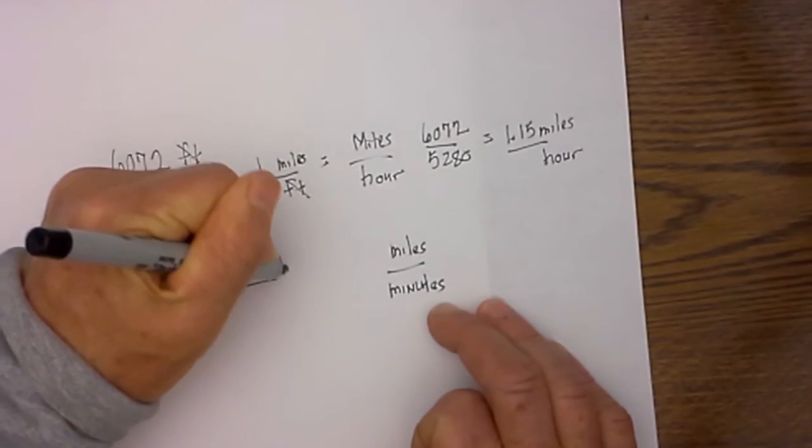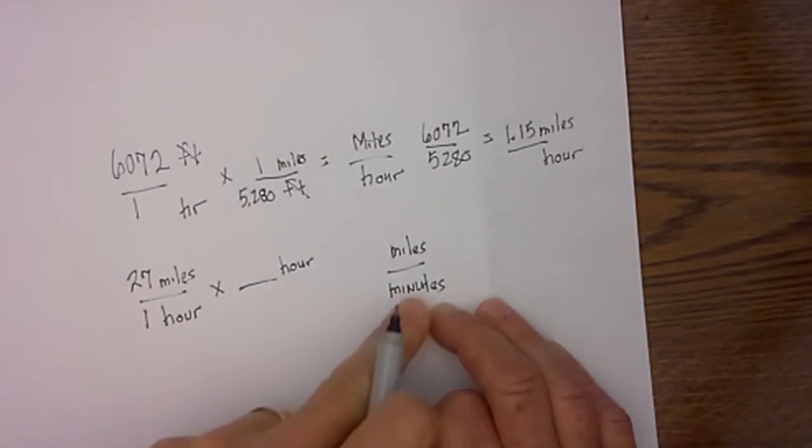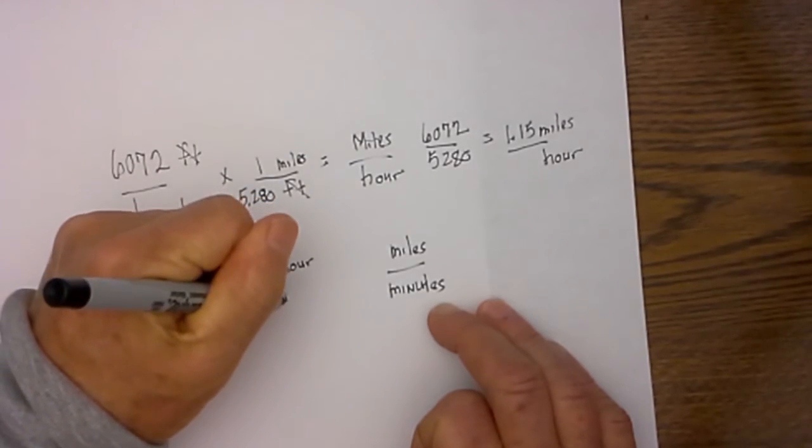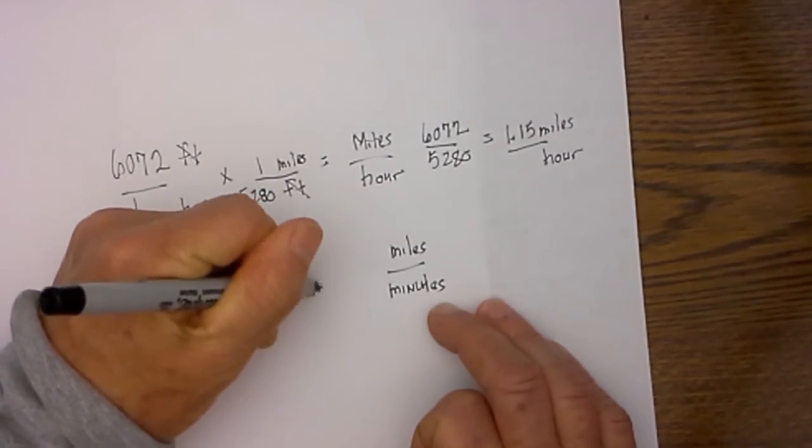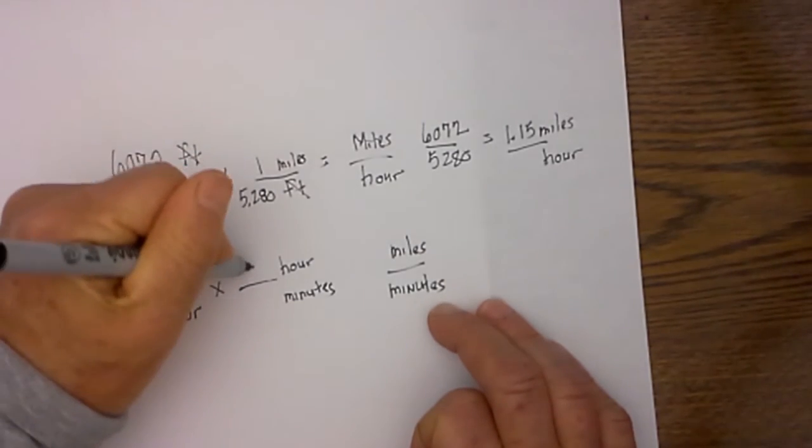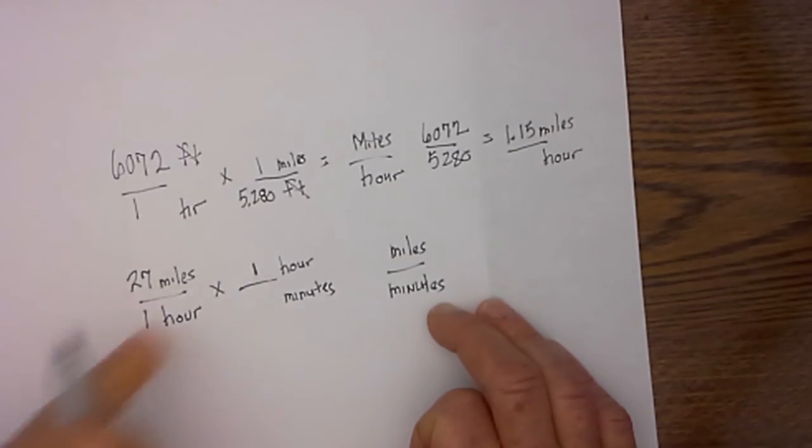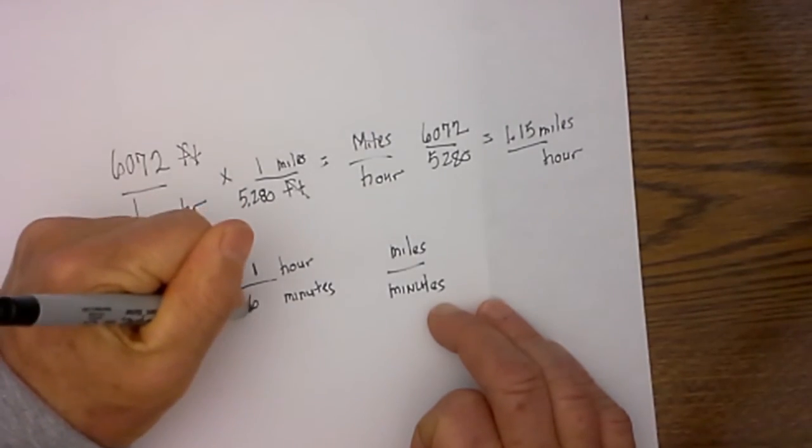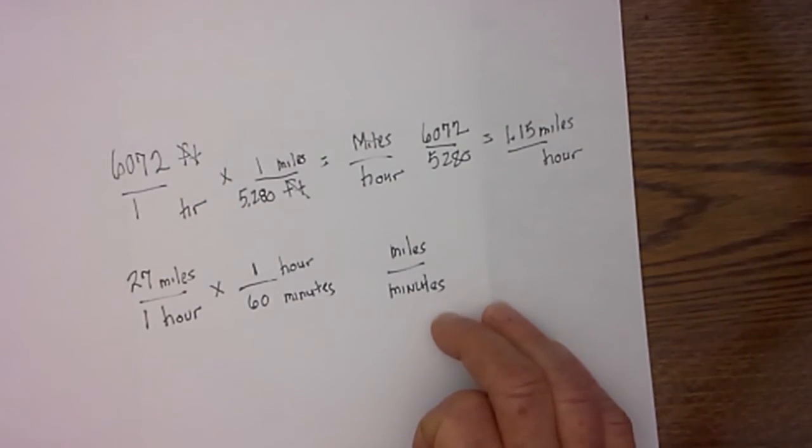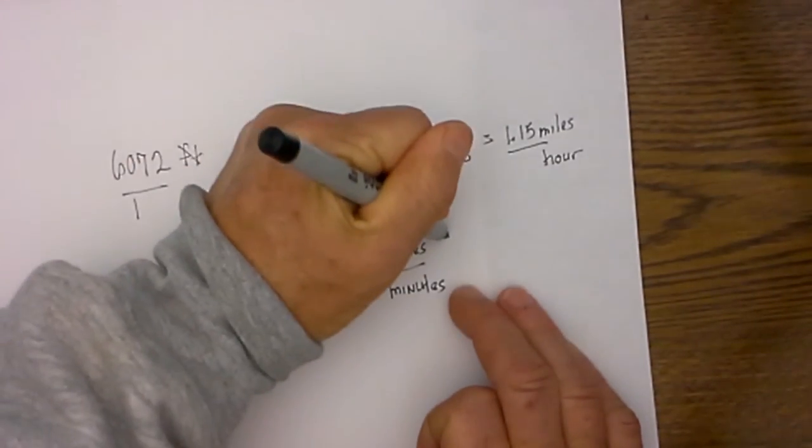So I'm going to place now the hour on top because they will cancel. I then looked at my goal for a clue, and I'm going to move minutes there. I'm going to place a one by the larger unit, and in one hour you have 60 minutes. I then just take 27 times one is 27.